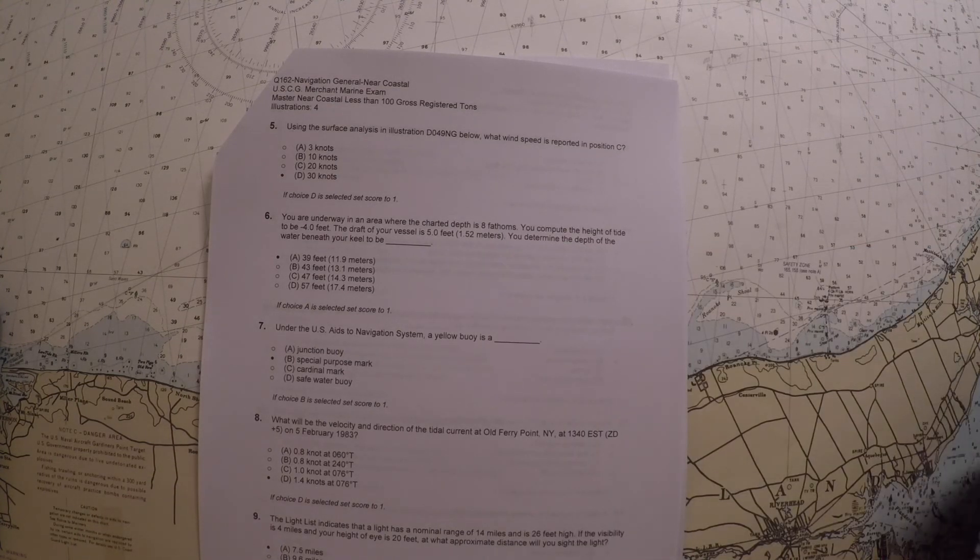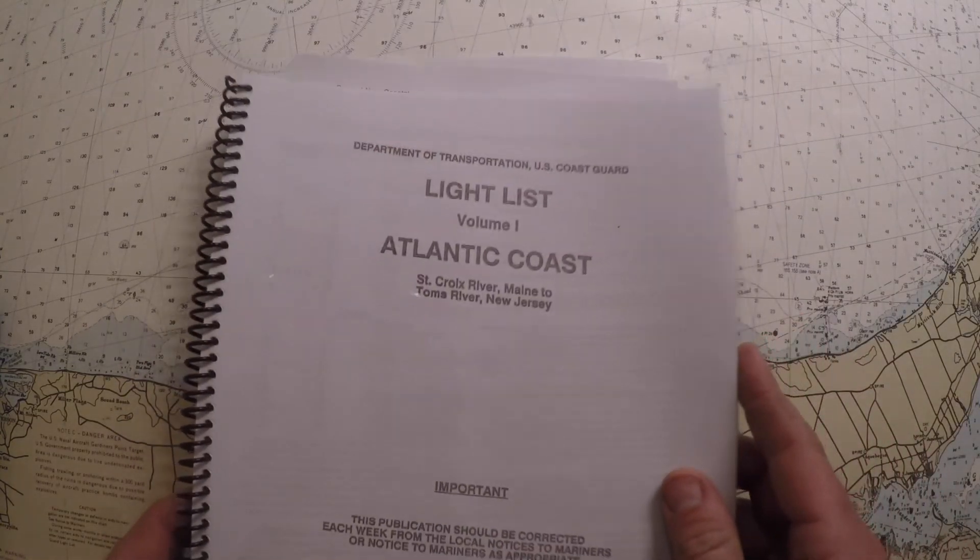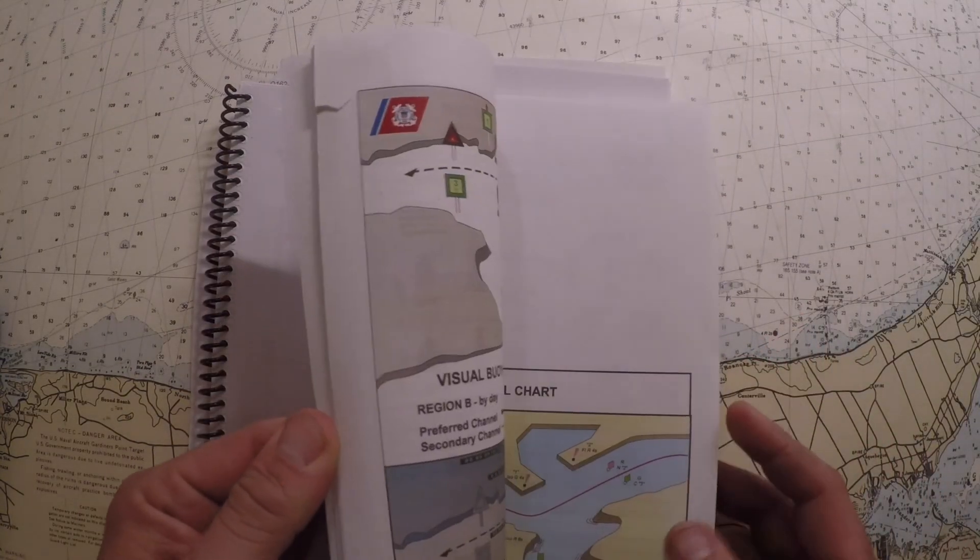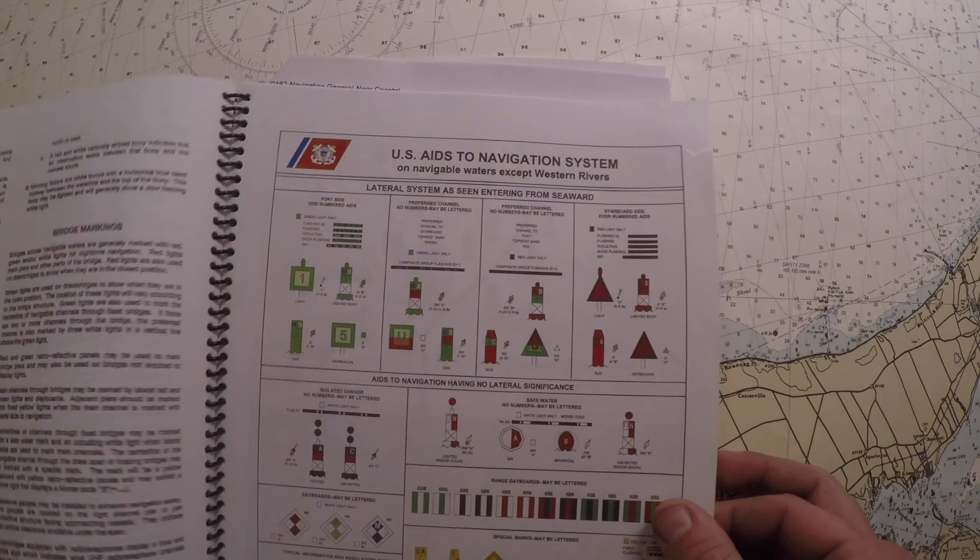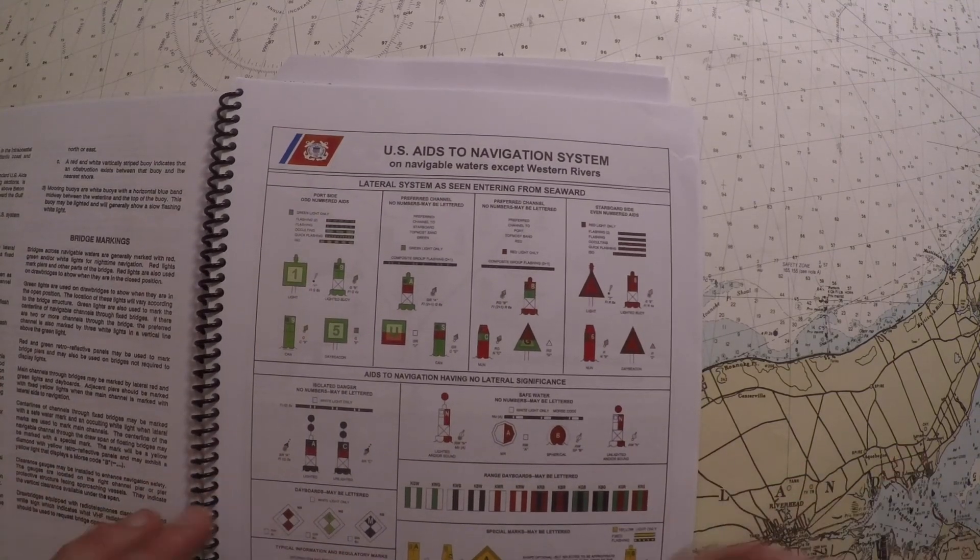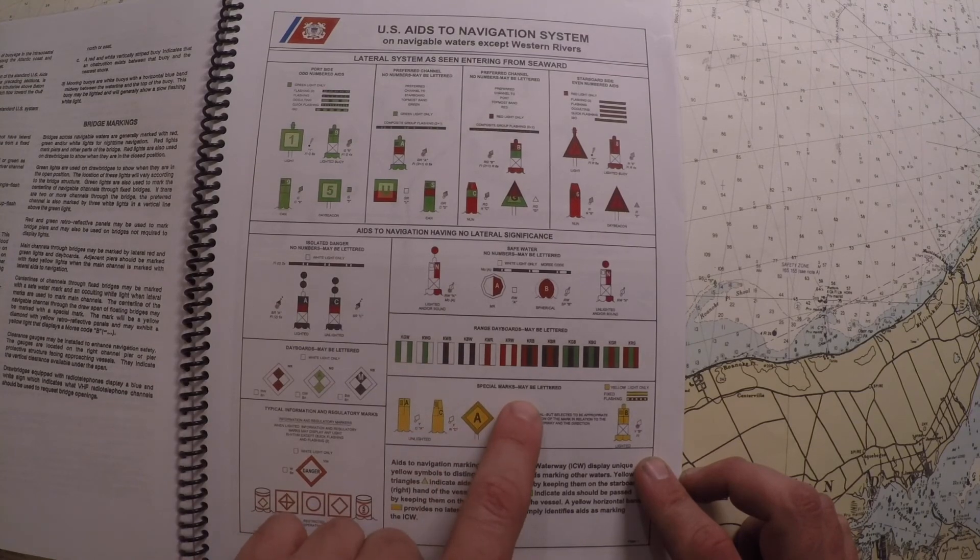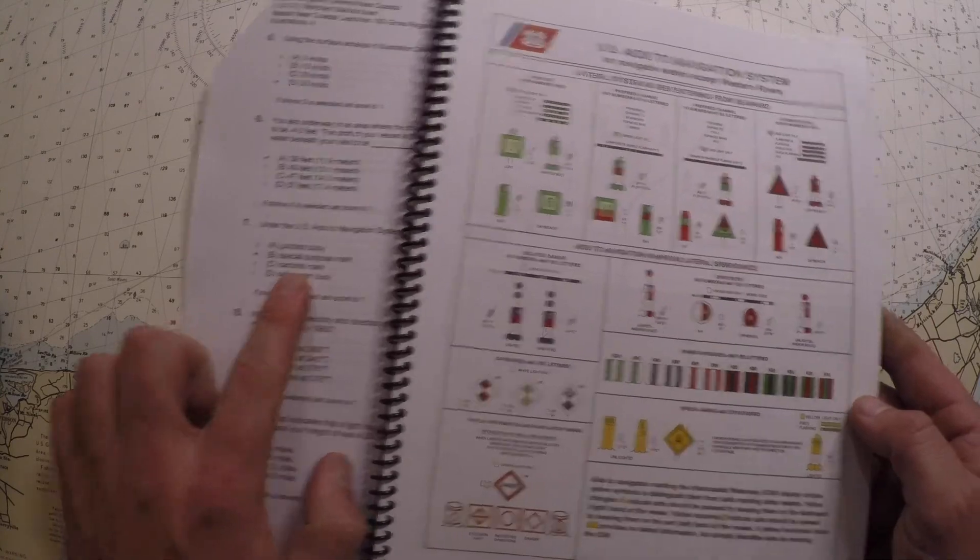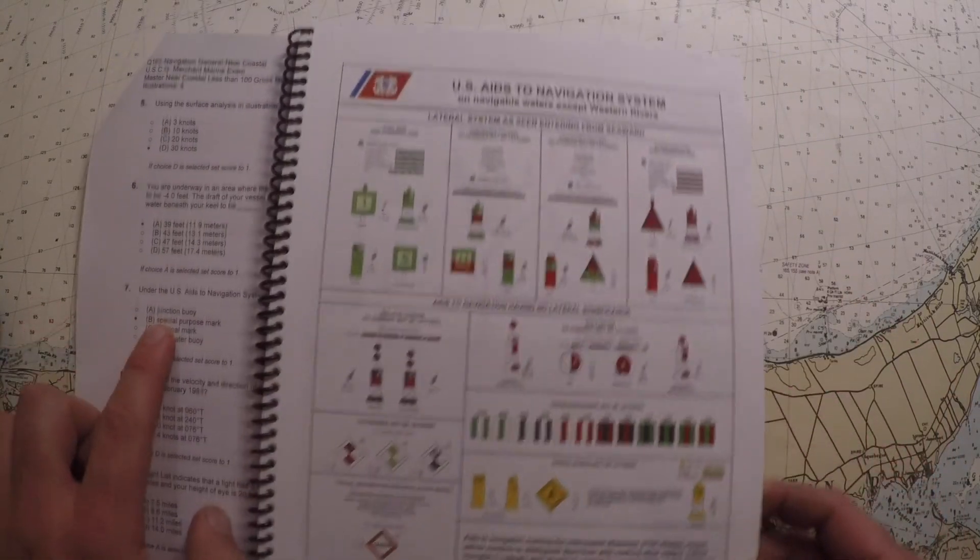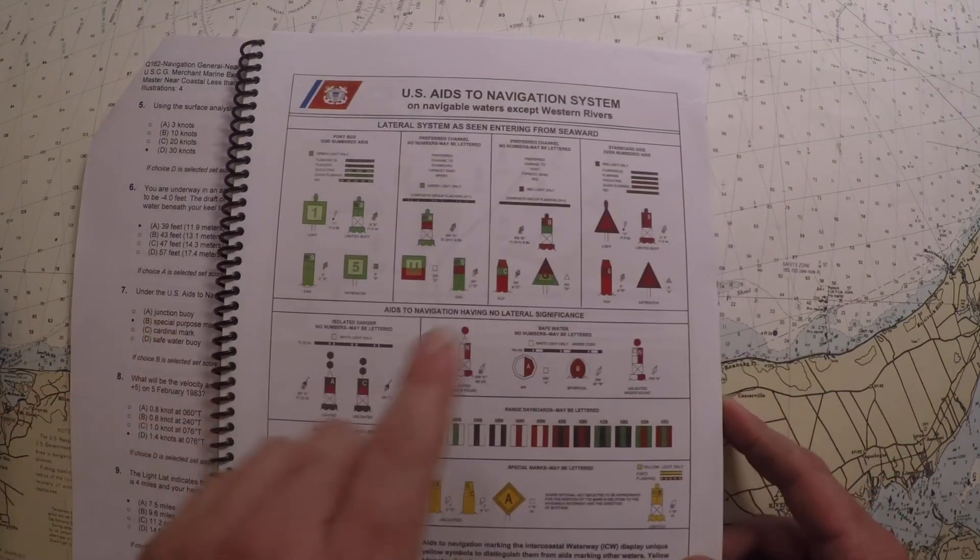Well, our answer to this is going to come out of the Light List. And in the Light List there's a section up at the front which kind of illustrates the US Aids to Navigation System. And so they're asking for a yellow buoy. And this looks yellow to me, it's a special mark, maybe lettered. So we've kind of got our answer there: special purpose mark. But just to run through the other ones, a junction buoy—it's actually not called a junction buoy, this is a preferred channel mark or a bifurcated channel mark.